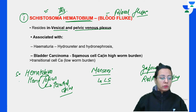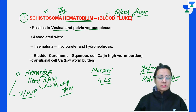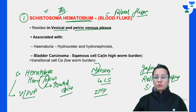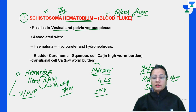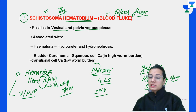Schistosoma hematobium resides in the vesicular and pelvic venous plexus. Mansoni resides in the inferior mesenteric vein. Japonica - just like Japan people are superior in advancement but smaller - they reside in the superior mesenteric vein but have a rudimentary spine.